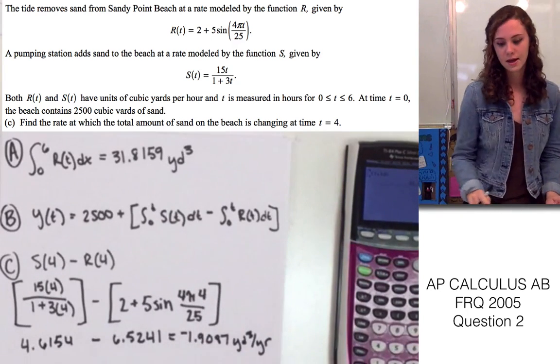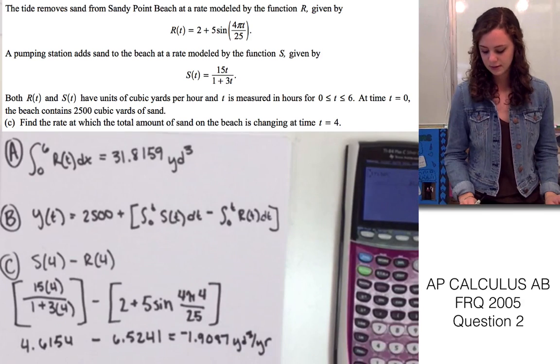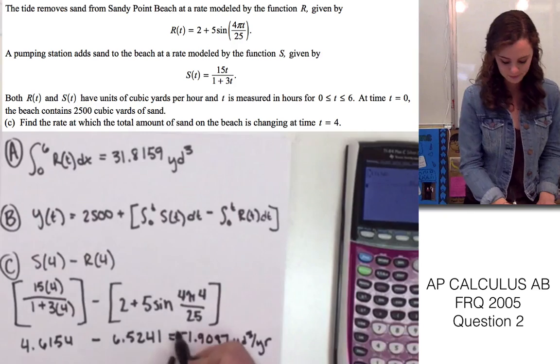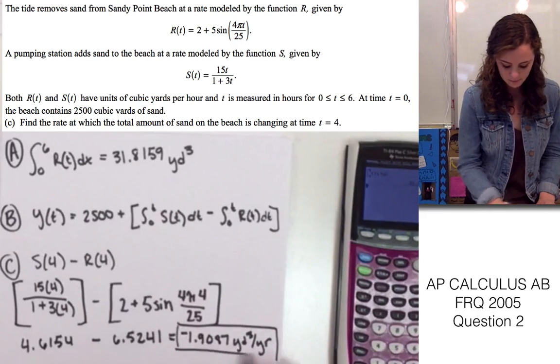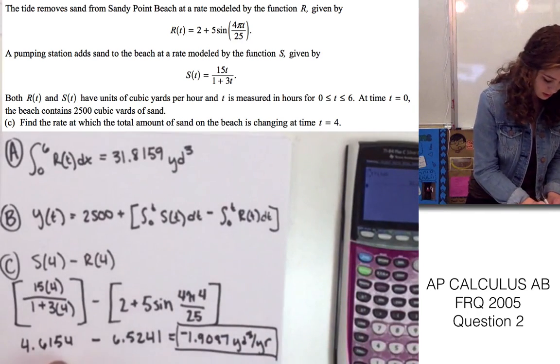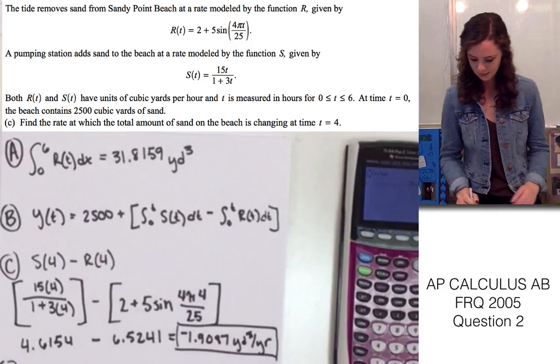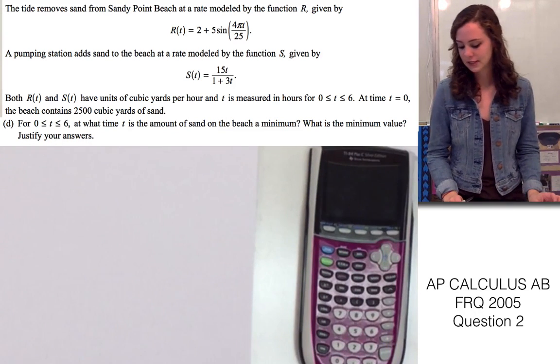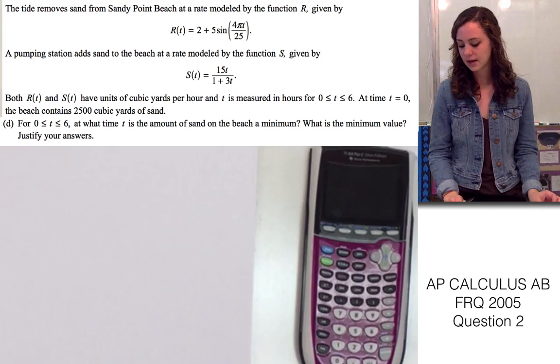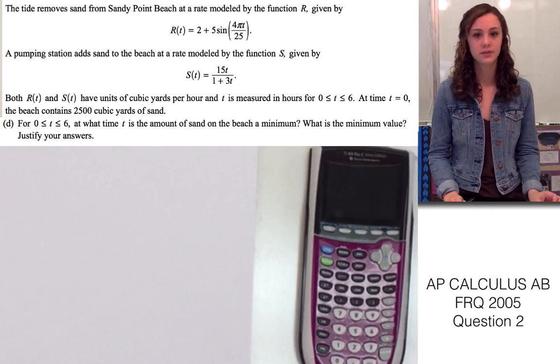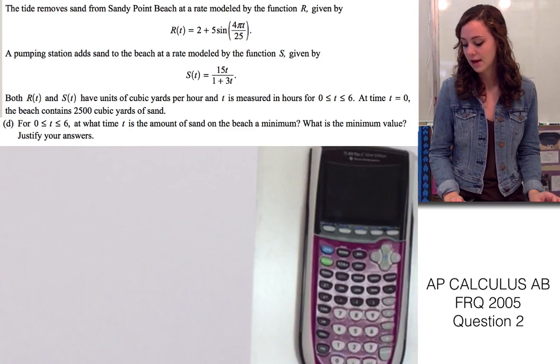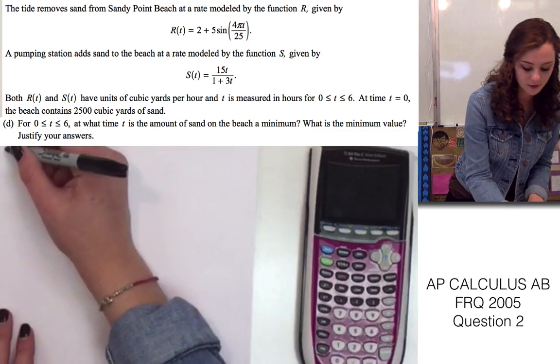That is the rate at which the amount of sand on the beach is changing at t equals 4. So, this is our answer to that one. Now we're going to be solving for part D. And this is asking at what time for t when t is between 0 and 6 is the sand on the beach at a minimum? And what is that minimum value?